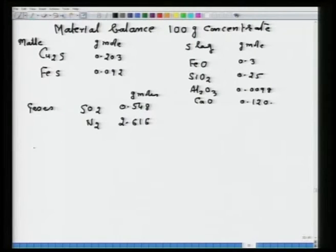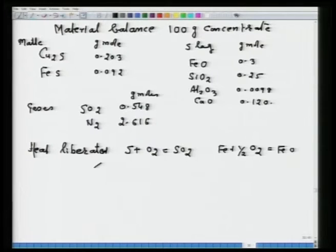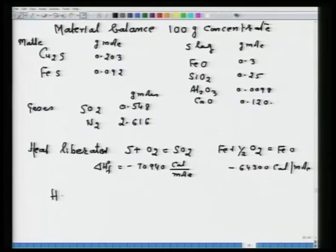Now we perform heat balance. Heat is liberated from two reactions: S + O₂ → SO₂ with ΔH°f = −70,940 cal/mol, and Fe + ½O₂ → FeO with ΔH°f = −64,300 cal/mol. Using the moles of SO₂ and FeO, total heat liberated = 58,196 calories.